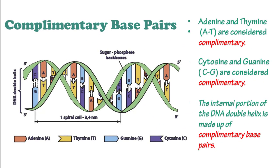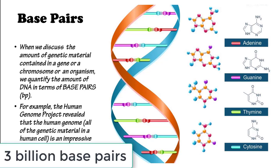Adenine and thymine are considered complementary. Cytosine and guanine are also considered complementary because they go with one another. The internal portion of the DNA double helix is made up of complementary base pairs. When we discuss the amount of genetic material contained in a gene, a chromosome, or an organism, we quantify the amount of DNA in terms of base pairs. The Human Genome Project revealed that the human genome is an impressive 30 billion base pairs.